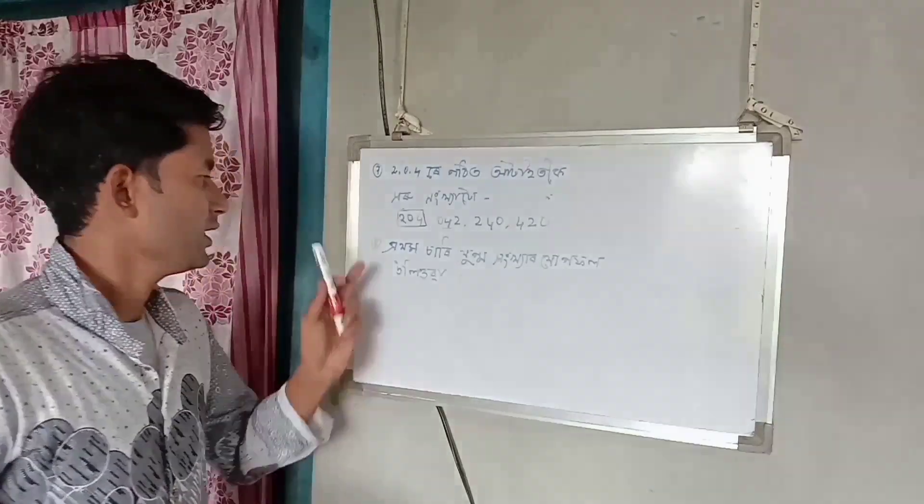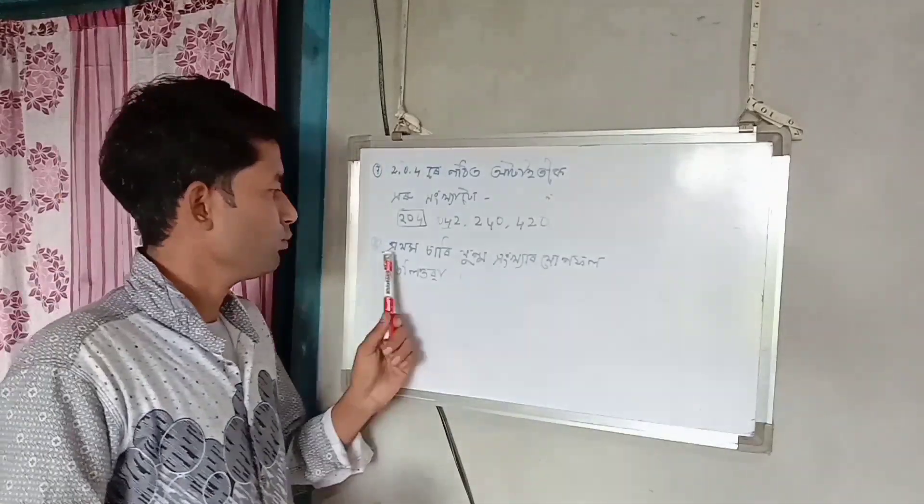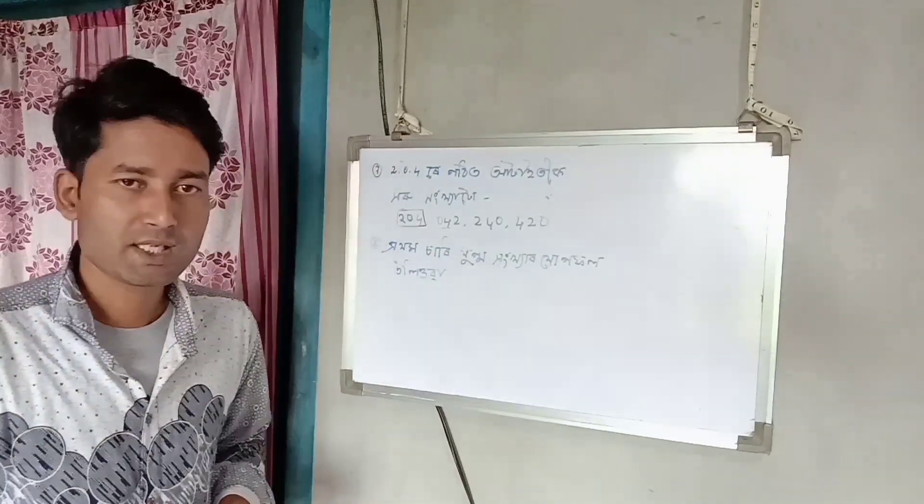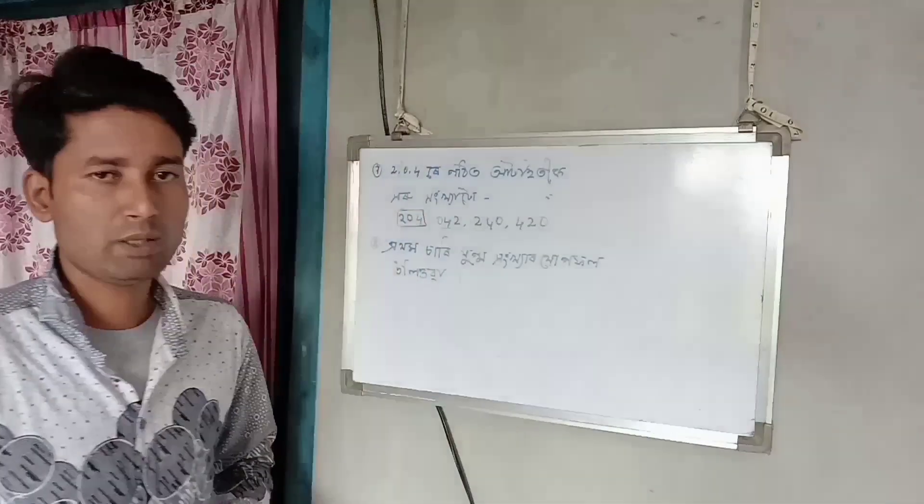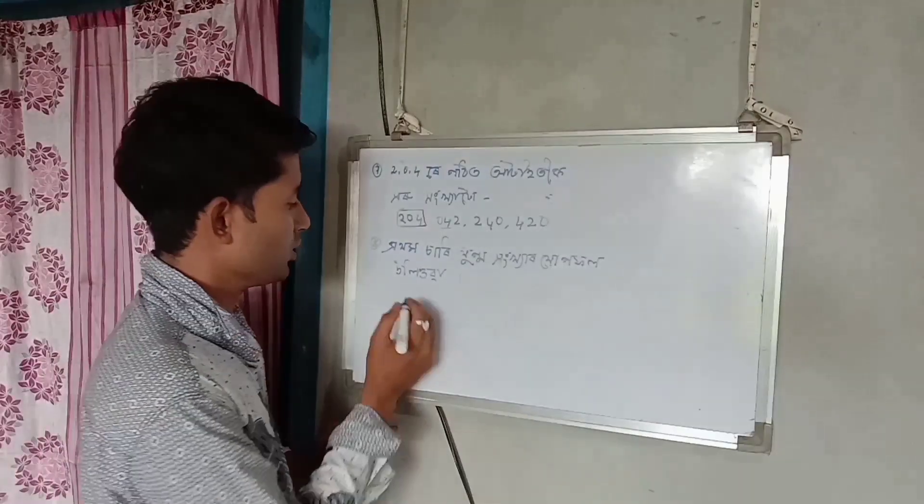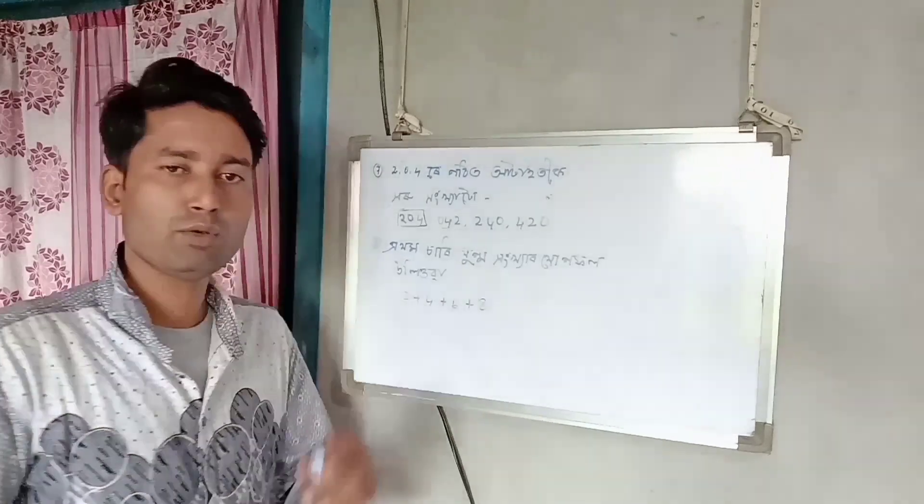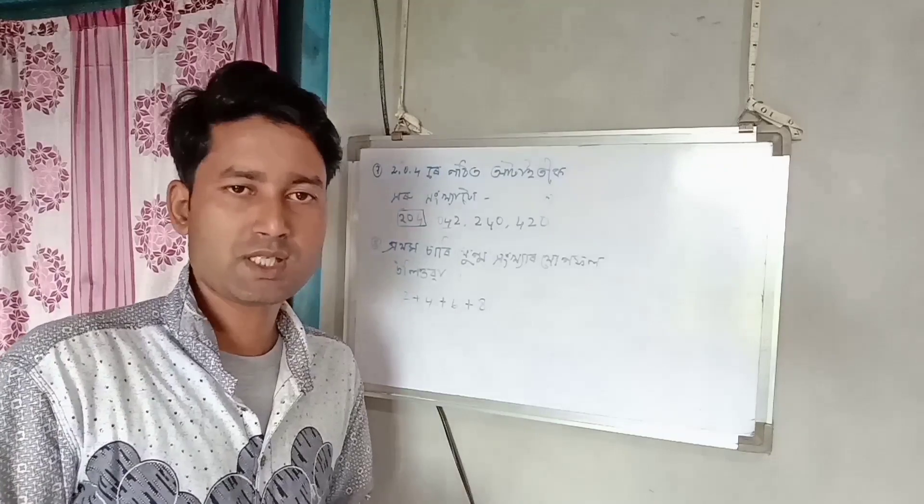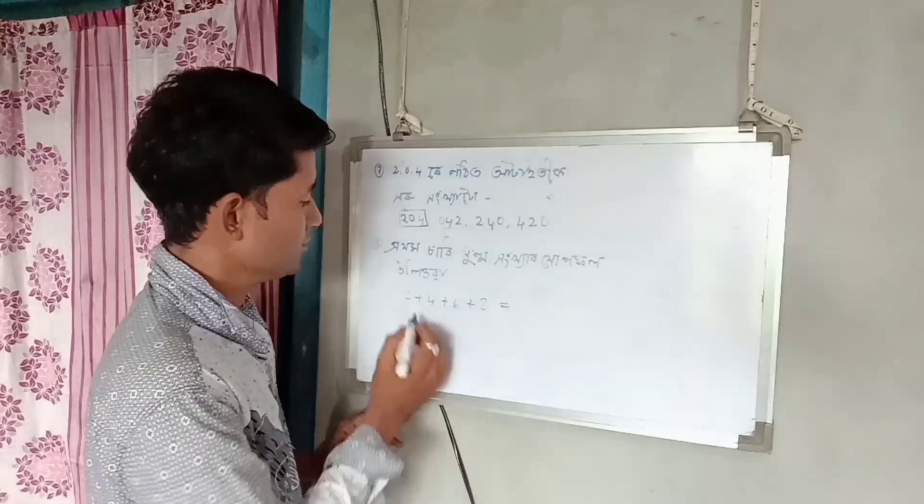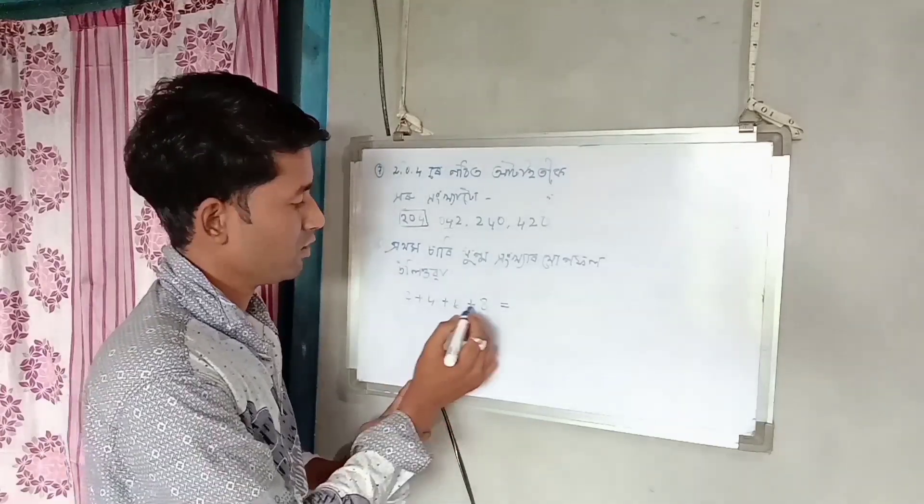The last question asks us to find the sum: 2 plus 4 plus 6 plus 8 plus 10 plus 12 plus 14 plus 16. When we add all these even numbers together, the answer is given.